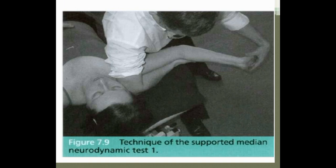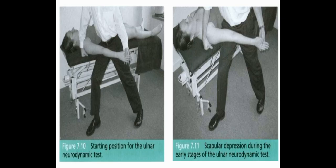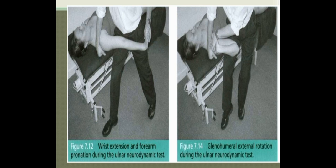This is the technique of the supported median neurodynamic test, where the elbow of the therapist rests on the couch — this position can also be utilized for MNT1. For the ulnar neurodynamic test, the therapist is in walk-standing position with one hand over the shoulder and the other holding the patient's hand while the patient lies supine. The sequence includes scapular depression, then wrist extension and forearm pronation, followed by glenohumeral external rotation.